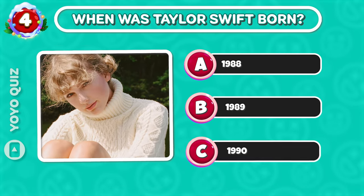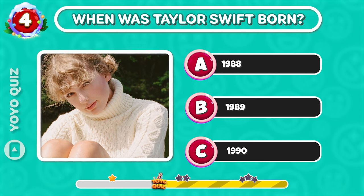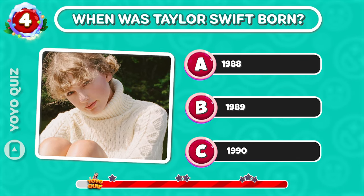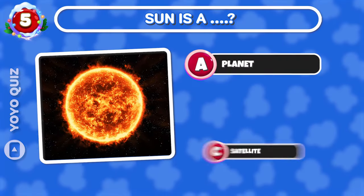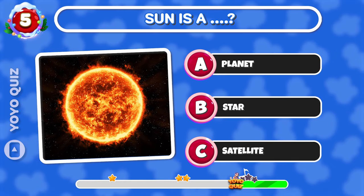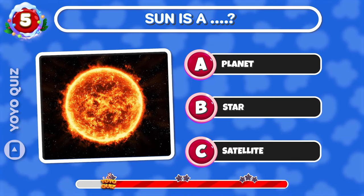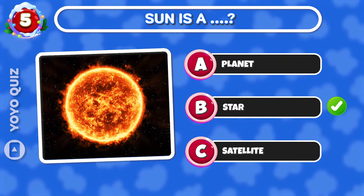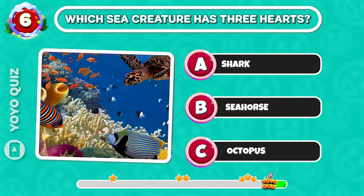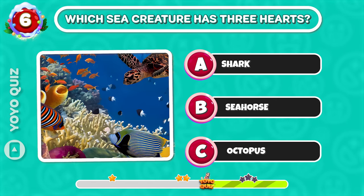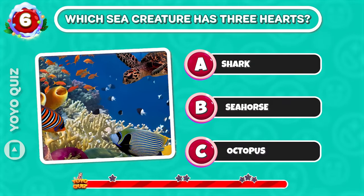Round 4: When was Taylor Swift born? B is the correct answer. Round 5: B is the correct answer. Round 6: Which sea creature has three hearts? It's C.